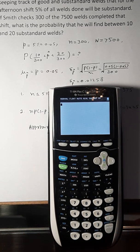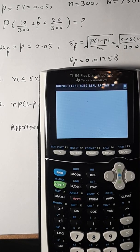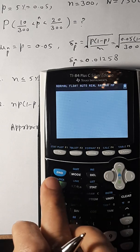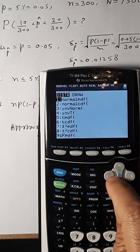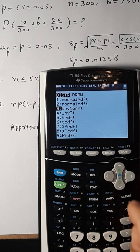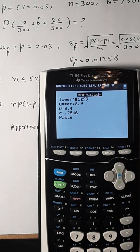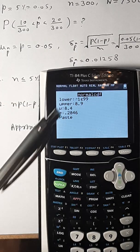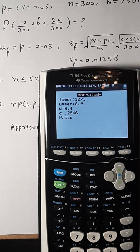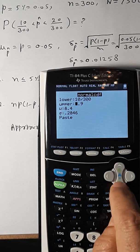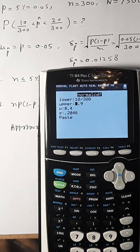Alright, let's plug in these values here. Second and distribution and go to normal CDF, number 2. And now here, lower limit is 10 out of 300, so plug in this: 10 divided by 300. And upper limit is 20, that's 20 out of 300.